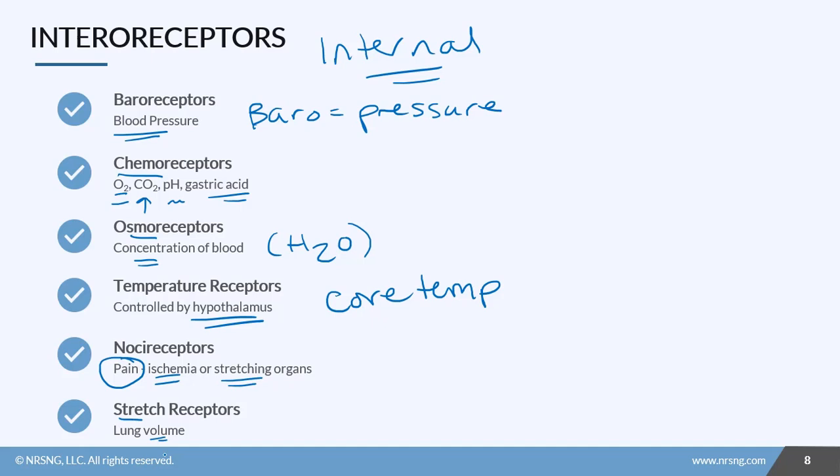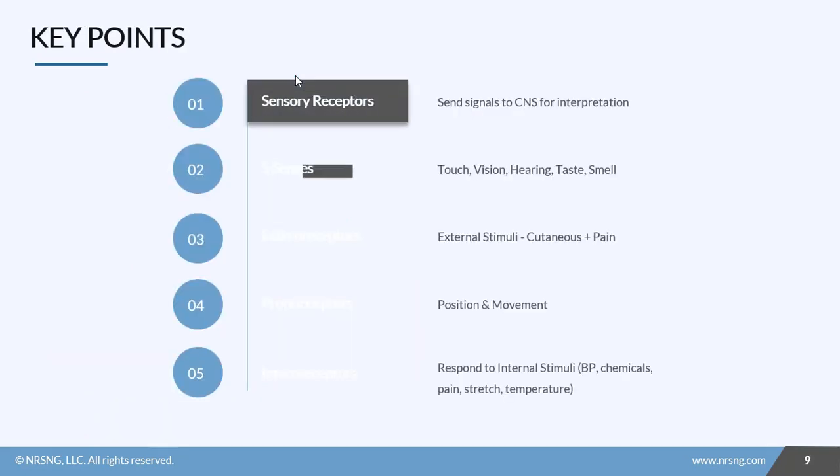And then finally we see stretch receptors in the lungs. They actually detect changes in the lung volume so your body can respond to it. So again, these are sensory receptors that respond to internal stimuli in the body.